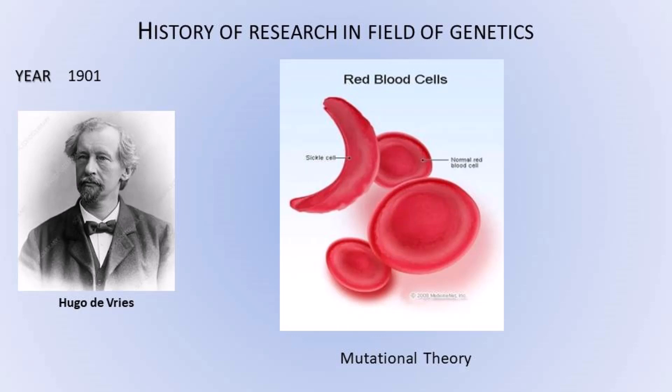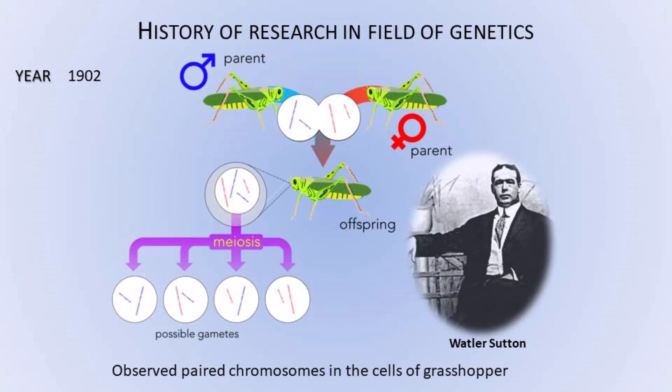In 1901, the reason behind sudden change was understood due to the mutational theory of Hugo de Vries. In 1902, Walter Sutton observed paired chromosomes in the cells of the grasshopper. Until then, it was not known to anyone. Research started in the direction of finding the nature of genetic materials, when it was proved that genes are carried by chromosomes.